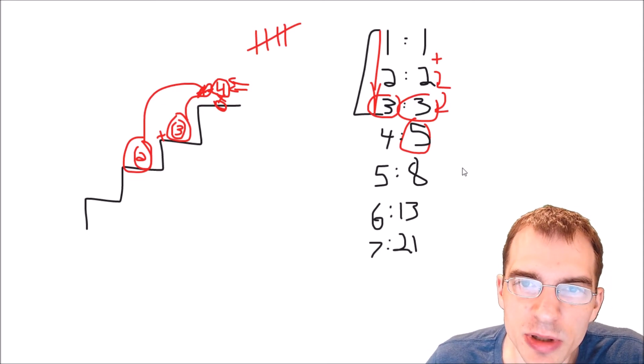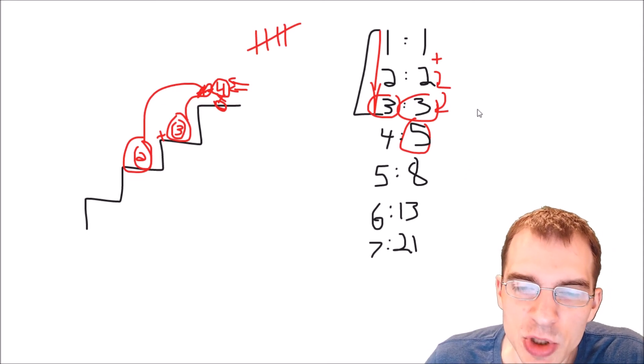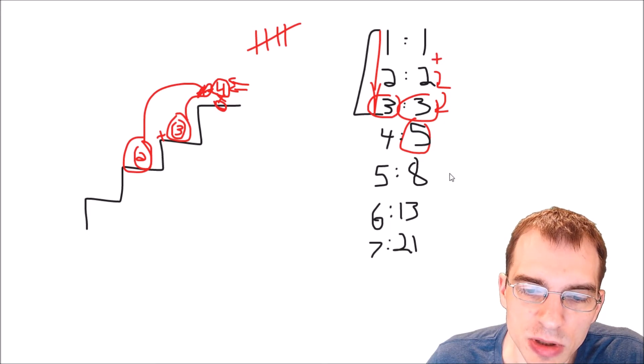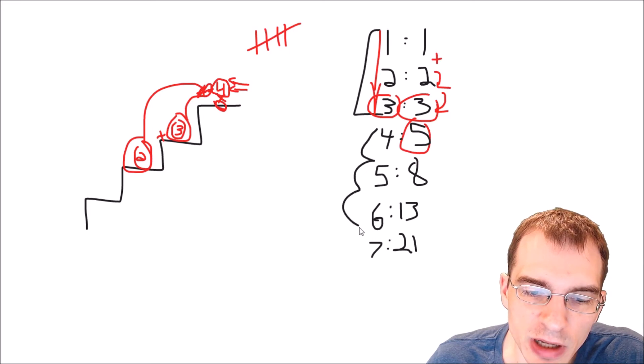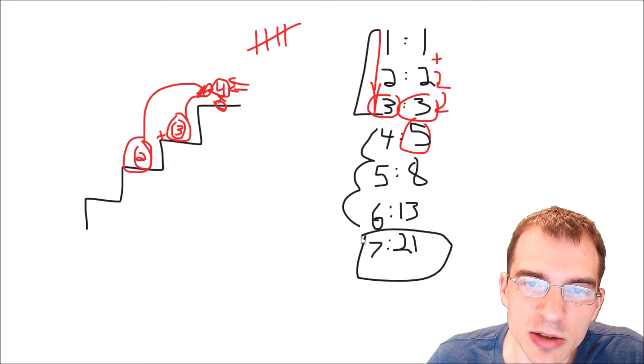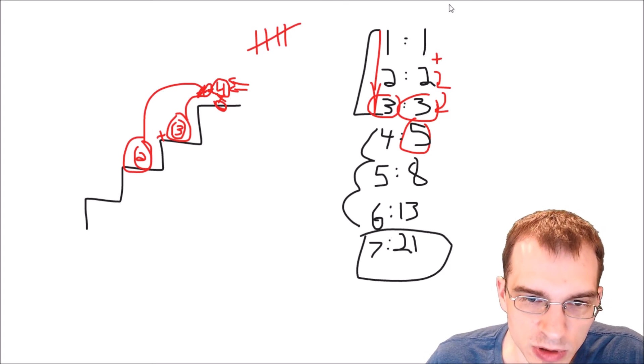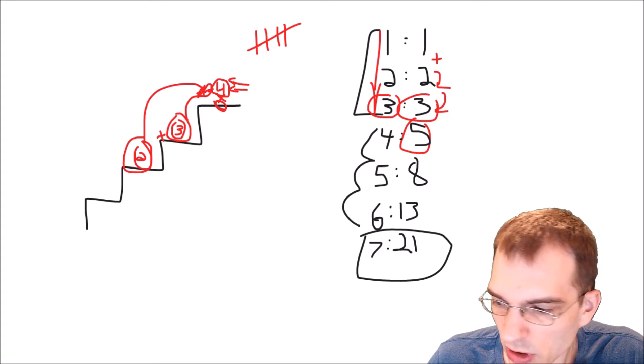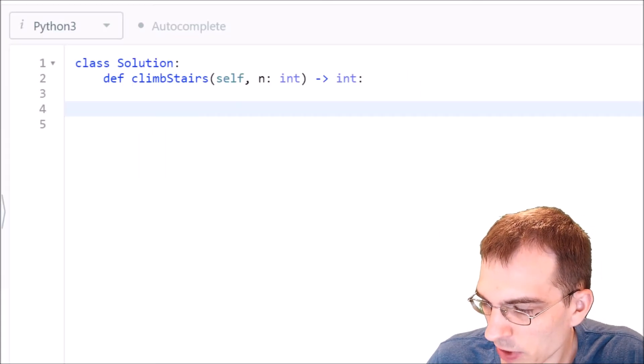So now that we have a handle on how the problem works better, we should be able to code up a relatively simple solution to do this. All we need to do is make a loop that goes up to our target value, calculate all of these intermediate values by adding the two previous ones, and then once we reach the final value, return it. So let's pull back to the code now so that we can implement our solution.